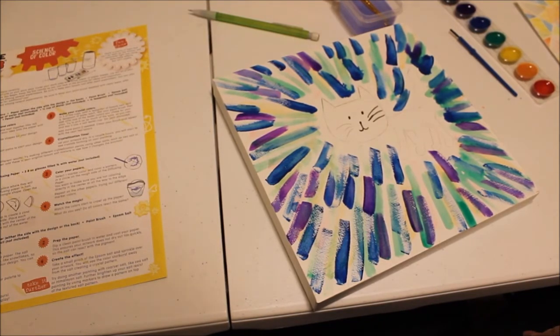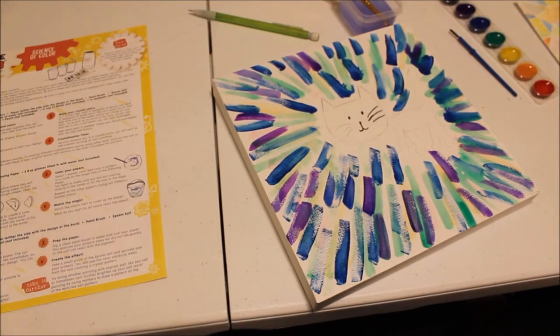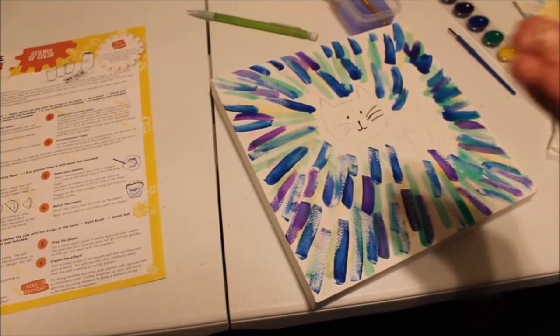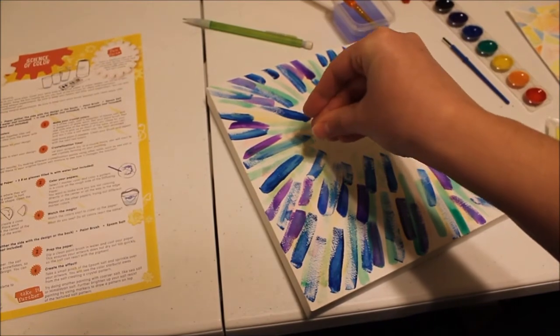It says to take a small pinch of Epsom salt and sprinkle over your artwork. You will see the color starburst away from the salt creating a crystal pattern. So let me get my salt. I got my salt, I'm going to see what happens.